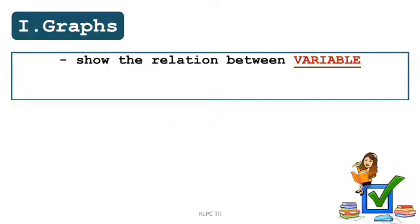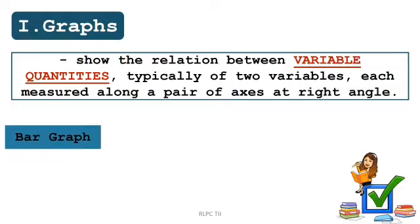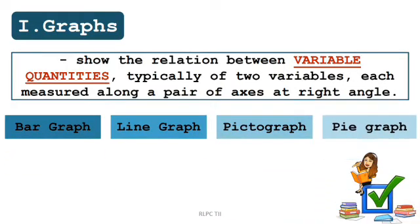Graphs show the relation between variable quantities, typically of two variables, each measured along a pair of axes at right angles. It can also be defined as a pictorial representation or diagram that represents data or values in an organized manner.